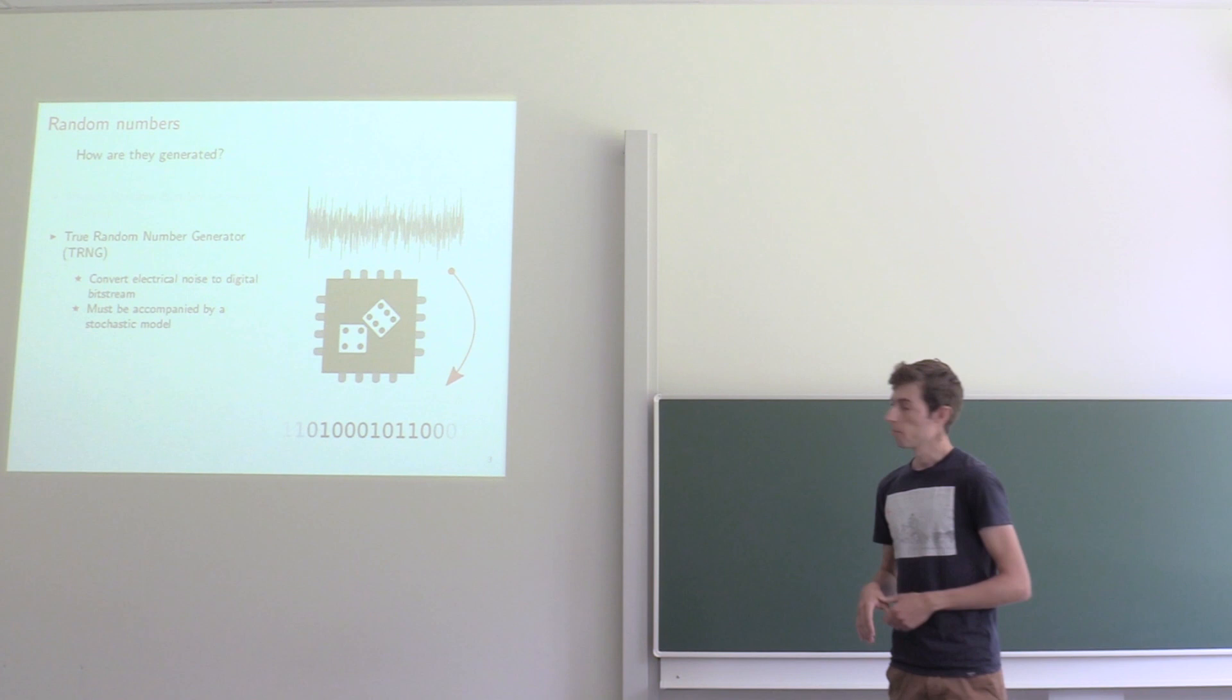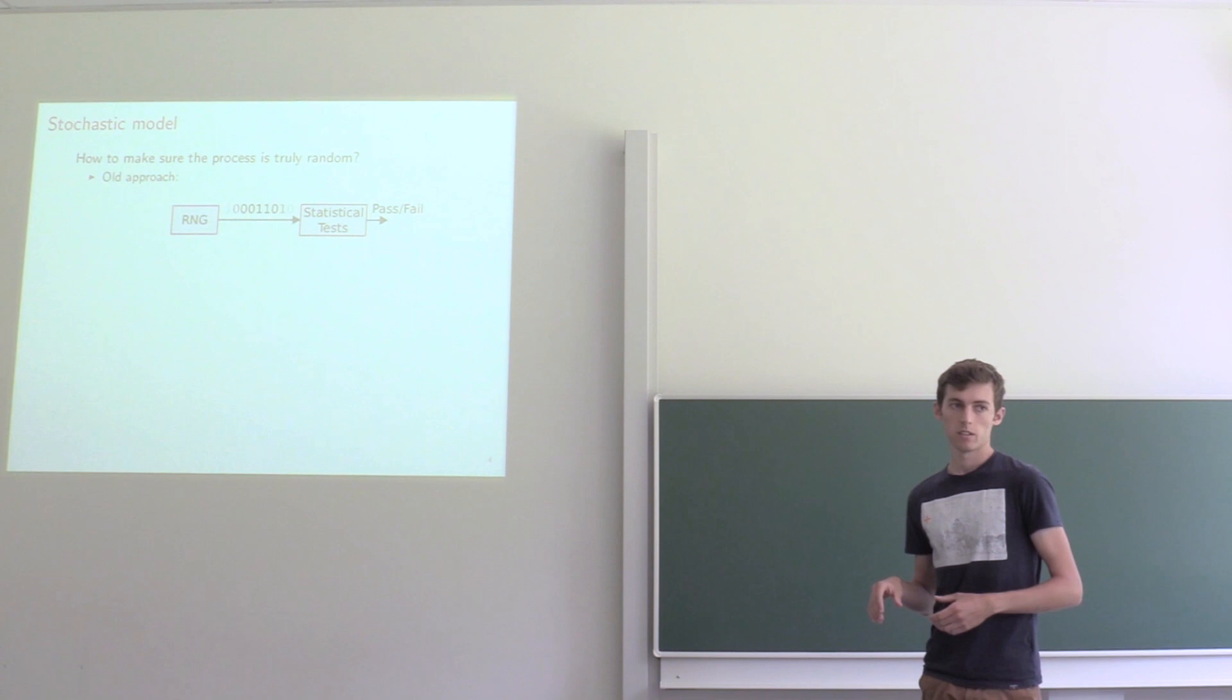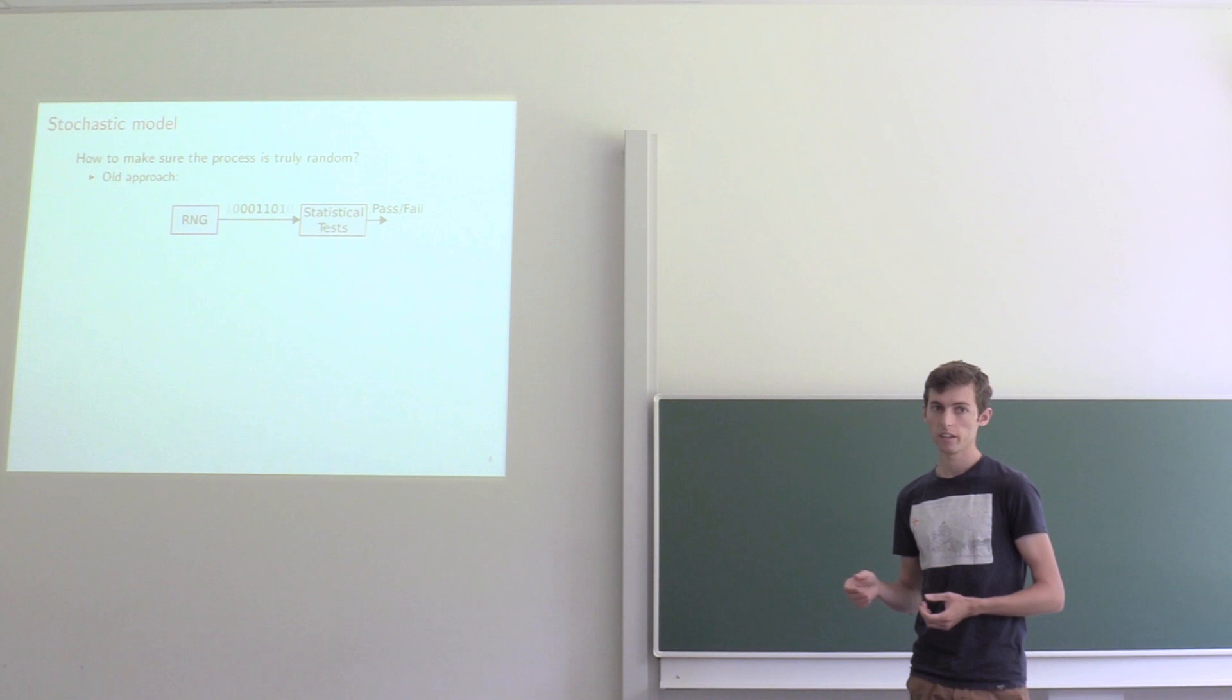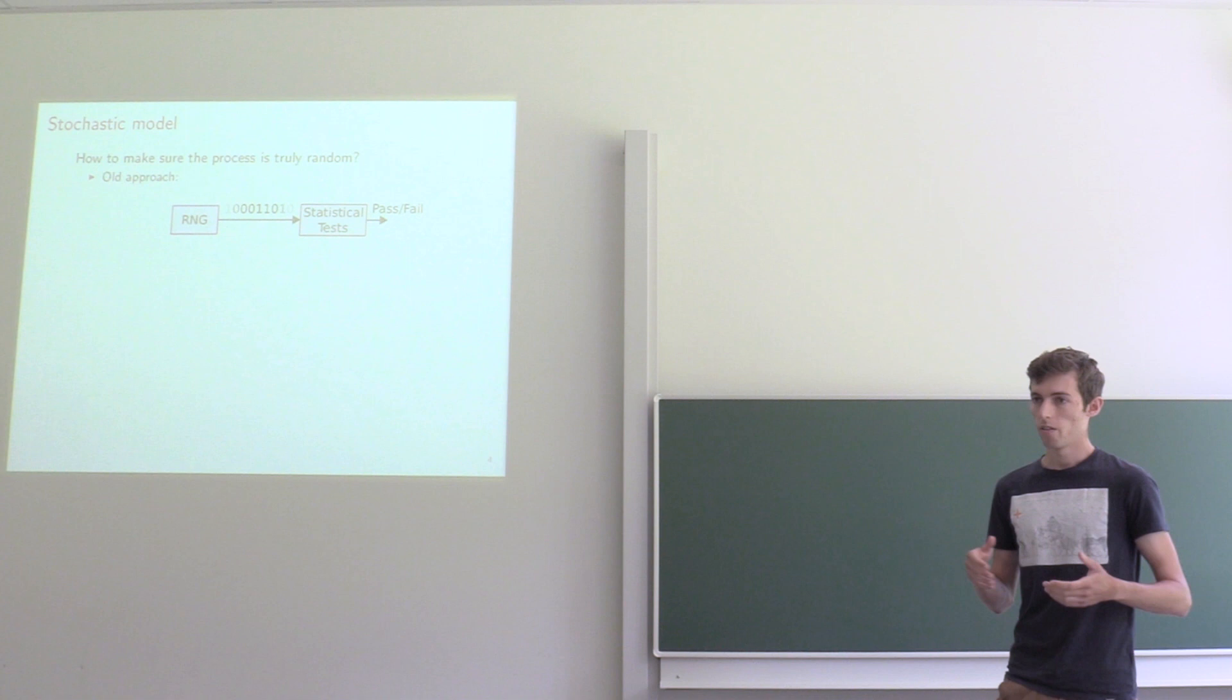So both of these devices create randomly looking numbers. So how can we know that a certain device is creating true random numbers and not just pseudo-random numbers that come from some very complex process?